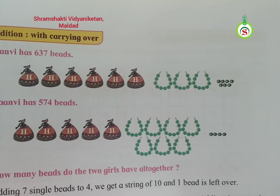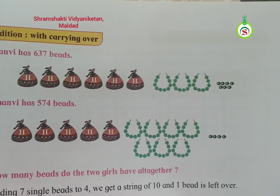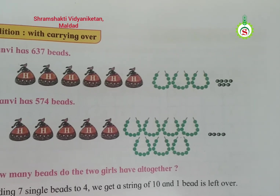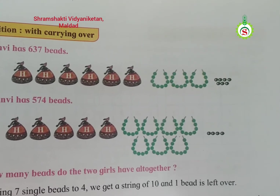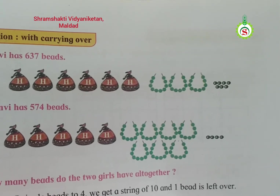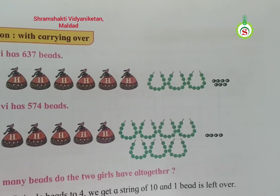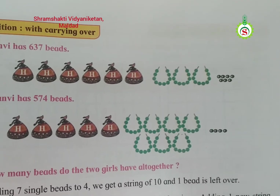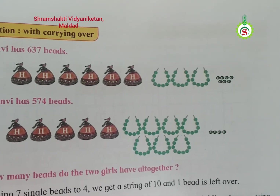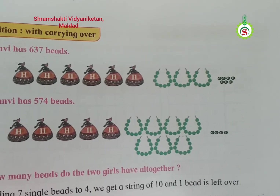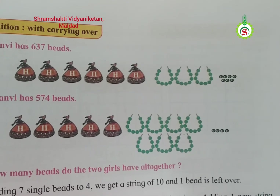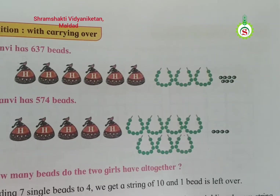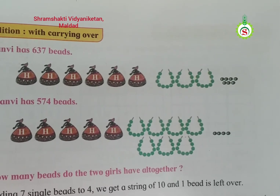Tanvi has 637 beads. Look in this picture. Here 6 purses are given — Yaj means 100 — so 6 purses means 600 beads, since there are 100 beads in each purse. Then here 3 strings are given. Count how many beads are in one string.